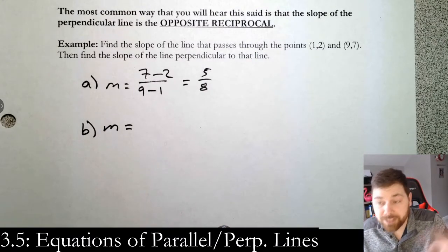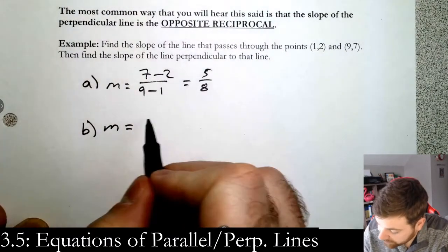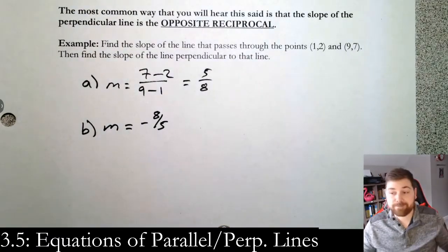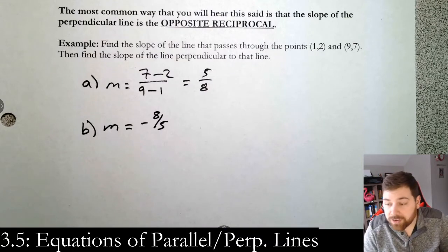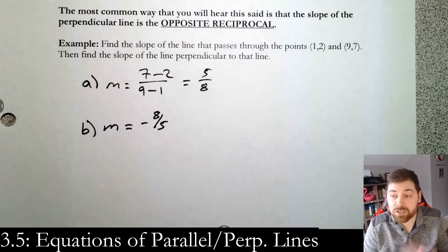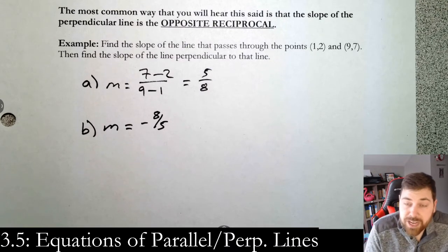Part B: if we want the slope of the line perpendicular, we need to do the opposite reciprocal. Simply put, flip it, add a negative. So it's 5 eighths, flip it—8 fifths, put a negative out front, and that's it. That's all there is to it. Nice and short video, nice and short section. You learned this stuff in middle school before, and that finishes out chapter three.